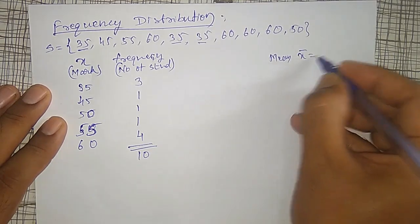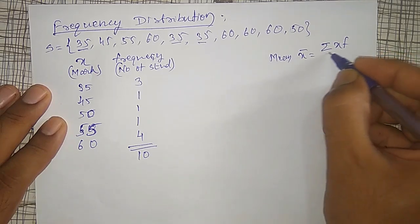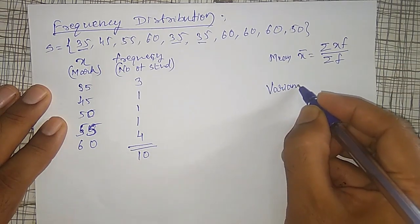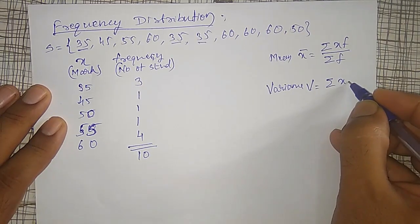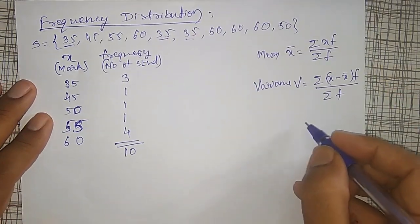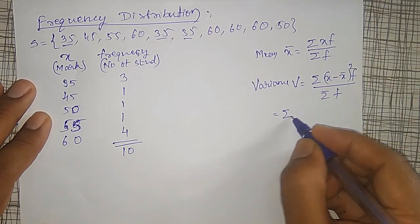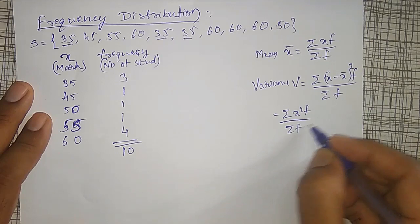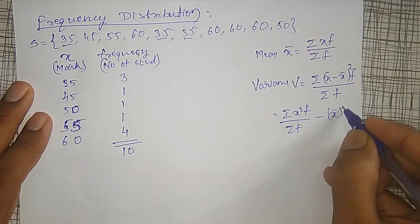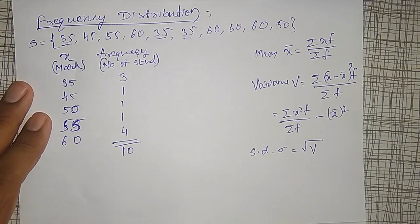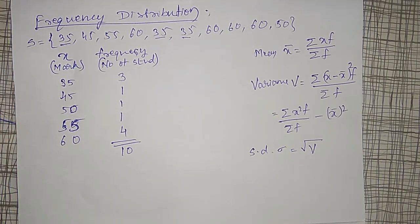To find the mean from frequency distribution: x̄ = Σ(x·f) / Σf. For variance: V = Σ(x - x̄)²·f / Σf, or equivalently V = Σ(x²·f)/Σf - x̄². Standard deviation is σ = √V. This is the frequency distribution approach to finding mean and variance.